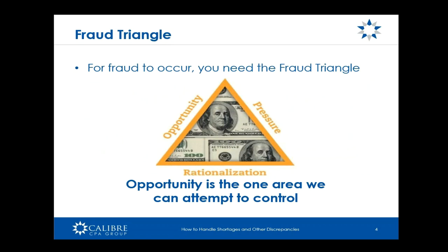The fraud triangle — many years ago some academics came up with this concept. For fraud to occur you need three things: pressure, where someone has a need to commit the fraud; rationalization, where they need to justify what they're doing in their own mind; and opportunity. Opportunity is the one area that we can attempt to control, and we're going to insert some internal controls that allow us to do so.